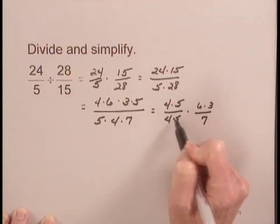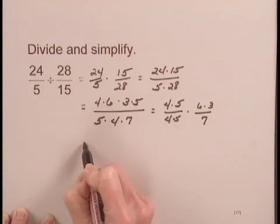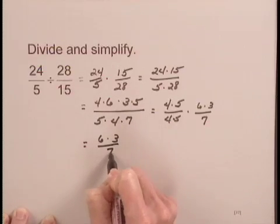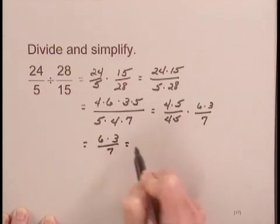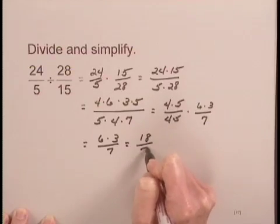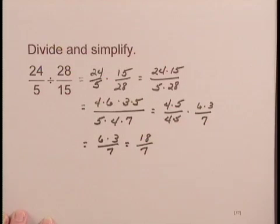4 times 5 over 4 times 5 is equal to 1, so I have 1 times 6 times 3 over 7, or just 6 times 3 over 7, and now I just finish the multiplication in the numerator. 6 times 3 is equal to 18, so the quotient is 18 over 7.